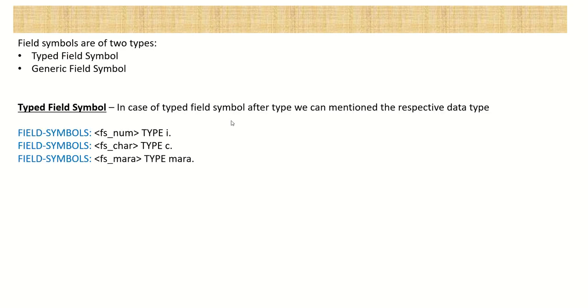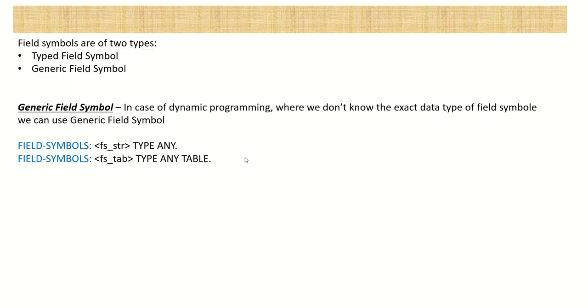There are two types of field symbols. One is called a typed field symbol and the second is a generic field symbol. For a typed field symbol, after the type keyword we mention the respective data type — whether integer, character, structure, table, etc. — and the field symbol will act only as that assigned type. For a generic field symbol, when we are not sure about the data type at runtime, we use type 'any' for variables or structures, or type 'any table' for tables. Generic field symbols are mostly used for dynamic programming.